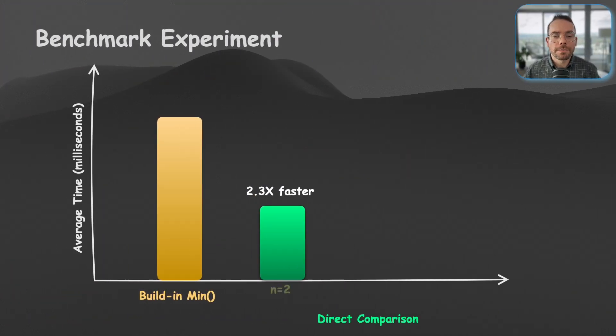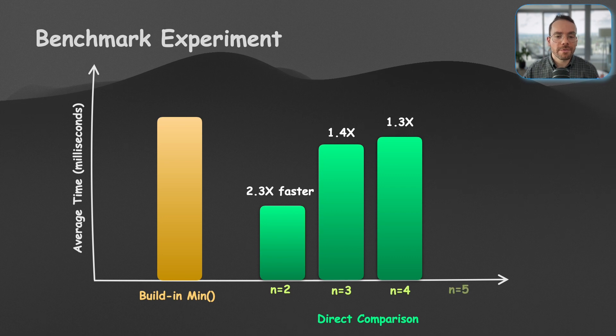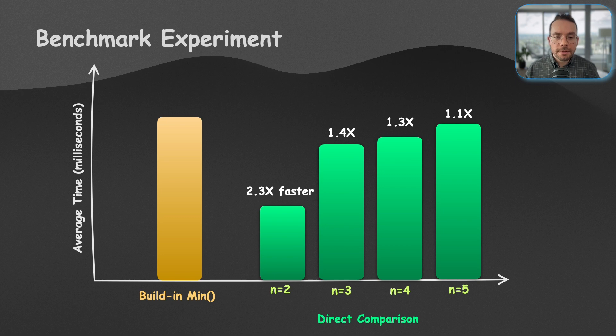But that was just for two numbers. What about input sizes of three or when we have four numbers or when we have five numbers? So you will see that the direct comparison approach is still better, faster, but the difference is actually fading away.